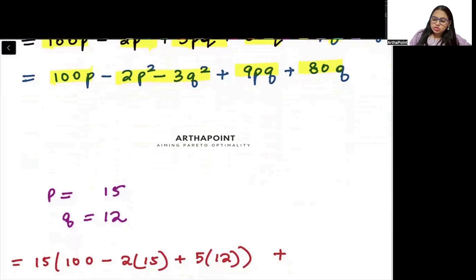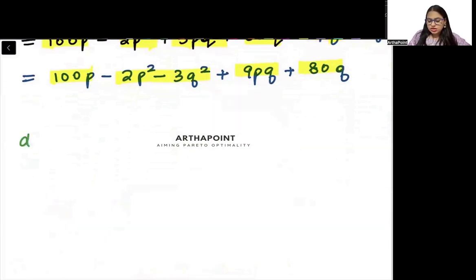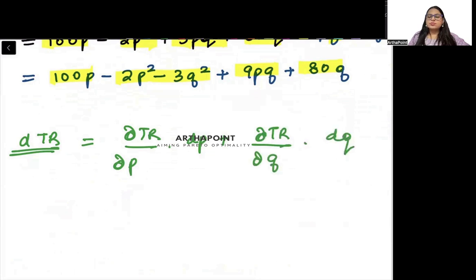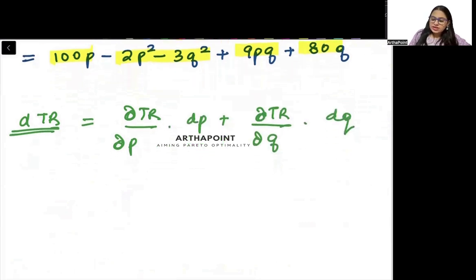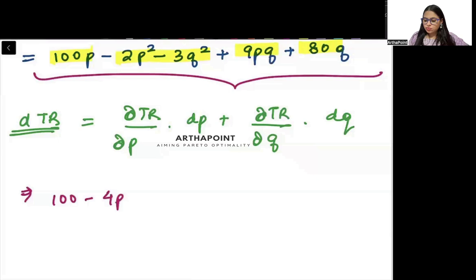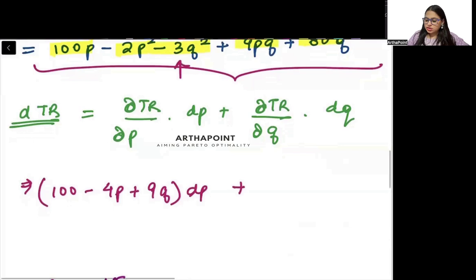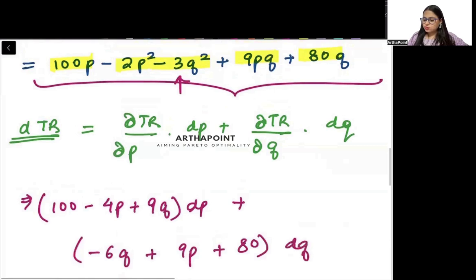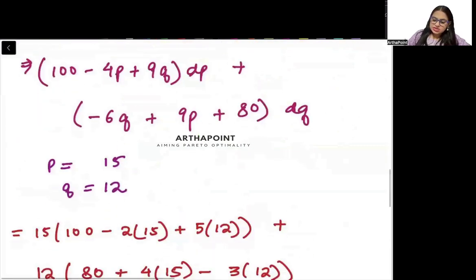Now I need to go ahead and find the change in the total revenue. We need to do total differentiation. dTR will be how total revenue changes as P changes times dP, plus how total revenue changes as Q changes times dQ. If I differentiate this with respect to P, I will get (100 minus 4P plus 9Q) into dP, plus if I differentiate with respect to Q, it will be (minus 6Q plus 9P plus 80) into dQ.